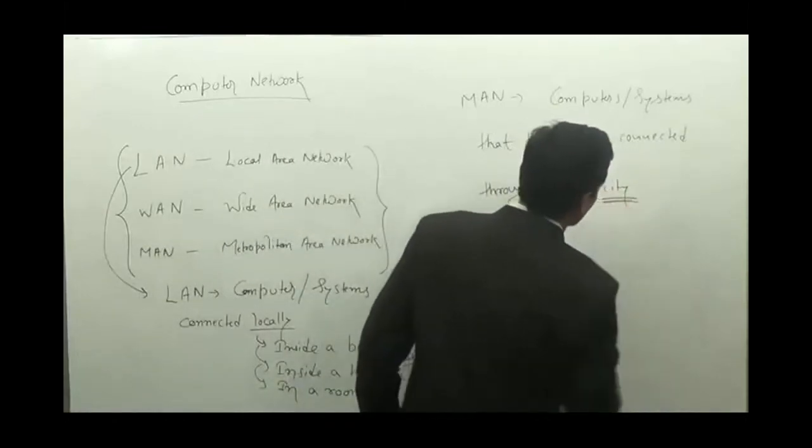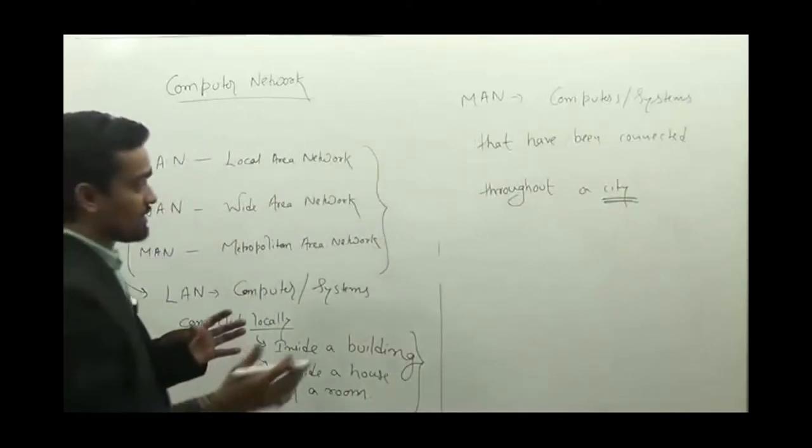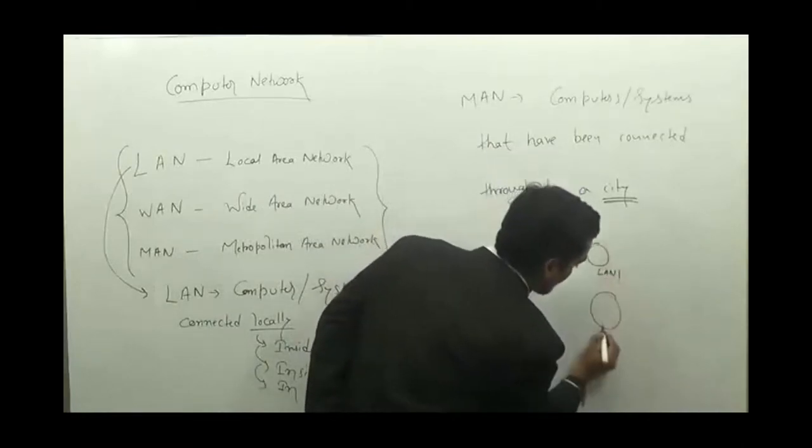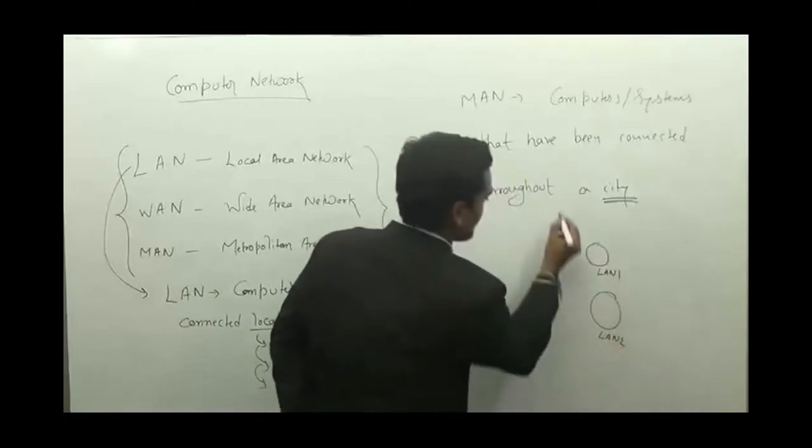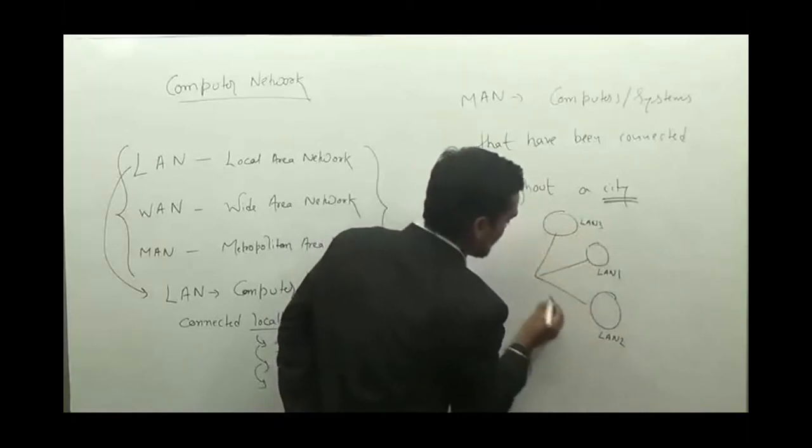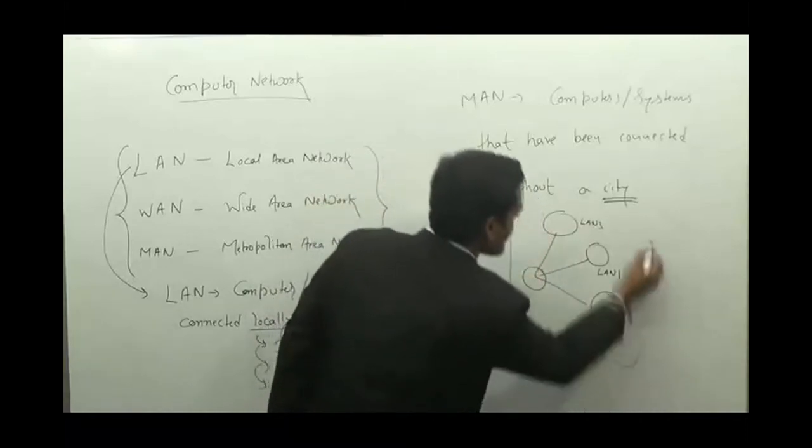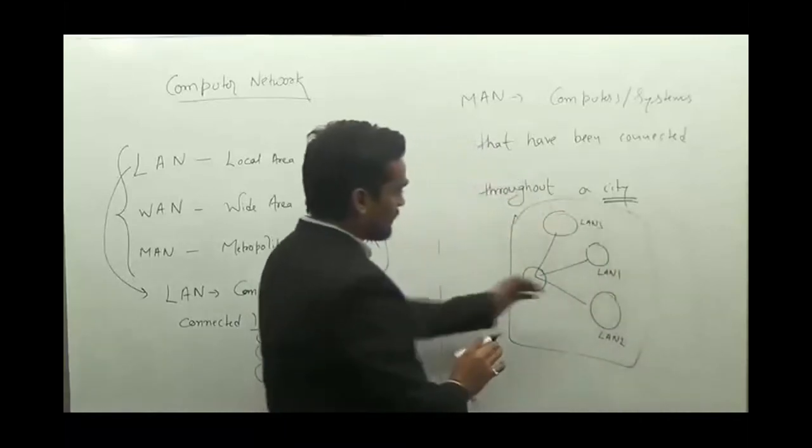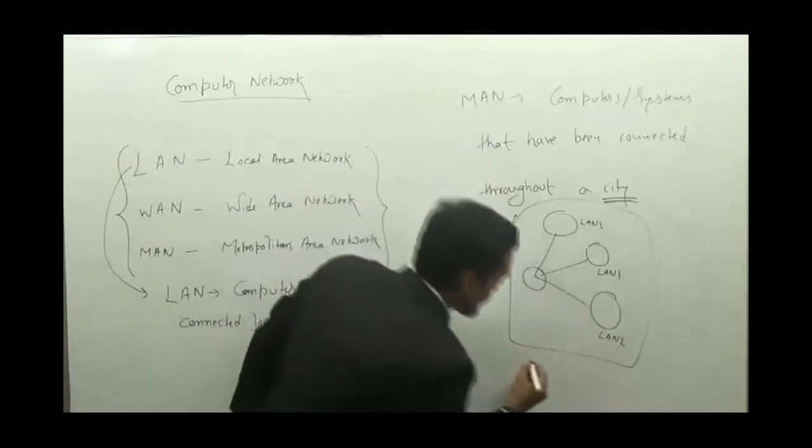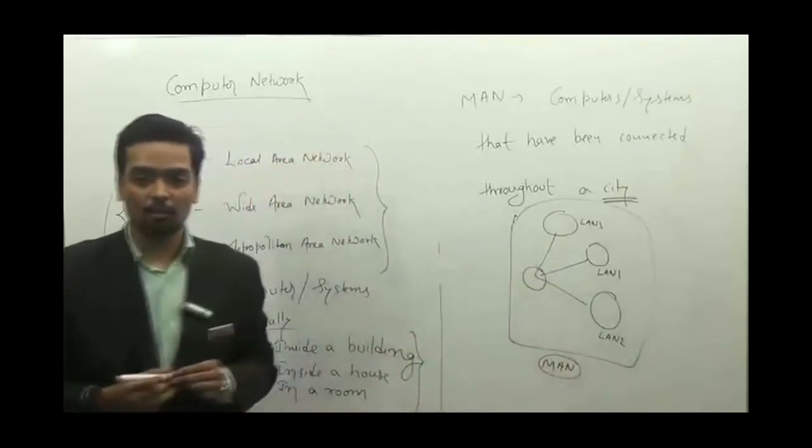Now, what I mean by this city is that a MAN is a network which can be made up of several LANs. That means this can be LAN 1, this can be another LAN 2, this can be another LAN 3, and these 3 LANs can be connected to each other in some way. And then we can say that if the connection of these 3 LANs covers a much larger geographical area than a LAN, then this is a MAN. The size of this MAN can be equivalent to the size of a city.